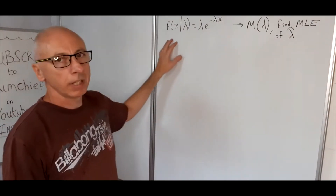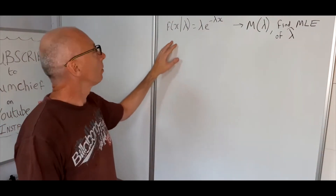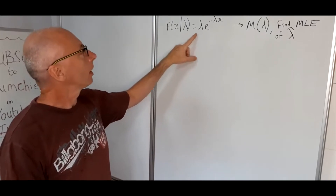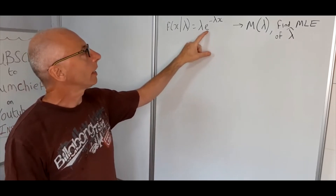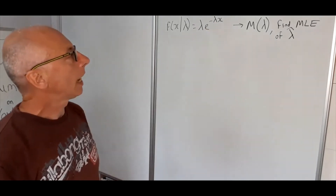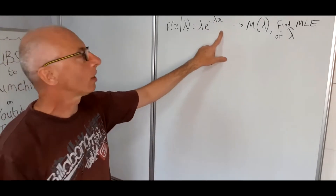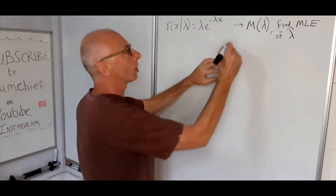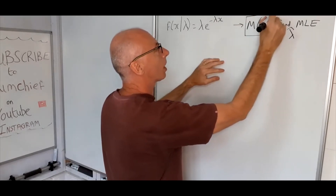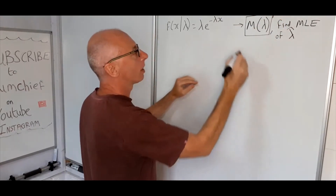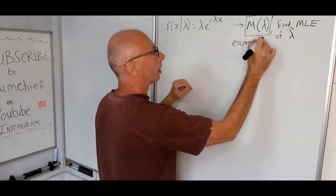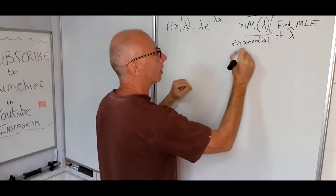Given the probability distribution function f(x | lambda) = lambda * e^(-lambda * x), this represents the exponential distribution, known as Exp with parameter lambda.